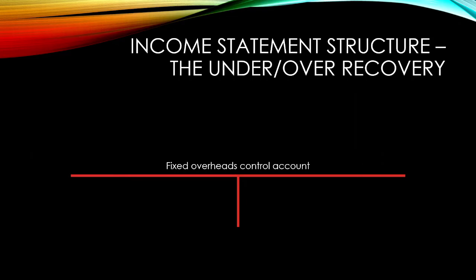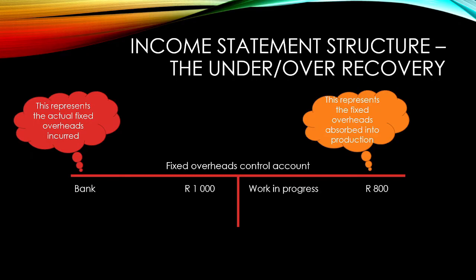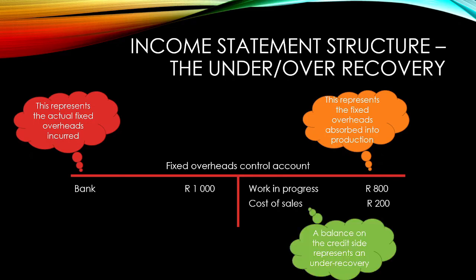The second situation is that we absorb less overheads into production than what we actually spend. In such a case, let us say that we still spend R1,000 on our overheads — the debit side. However, based on our predetermined overhead absorption rate, let us say that we only absorb R800 into production — the credit side. We have absorbed less into production than what we actually spent, and if we balance our account, we will have an extra R200 on the credit side. This represents an under recovery. An under absorption would be a debit in cost of sales, thereby increasing our cost of sales expense and reducing our gross profit.